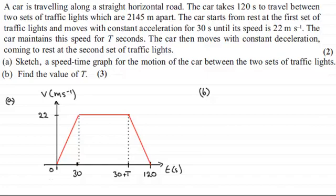We're given that the total distance traveled by the car is 2145 meters. On a speed-time graph, this is represented as the area underneath the graph, so we can set up an equation here.